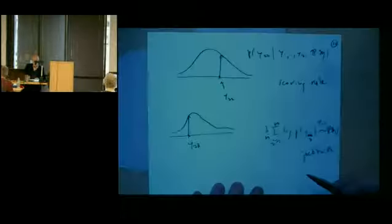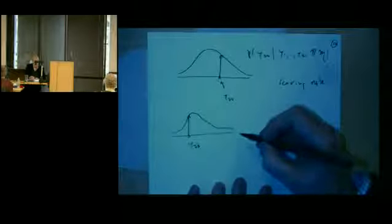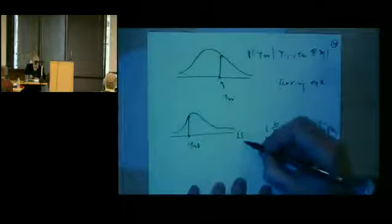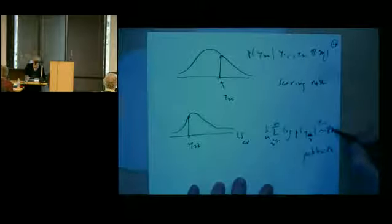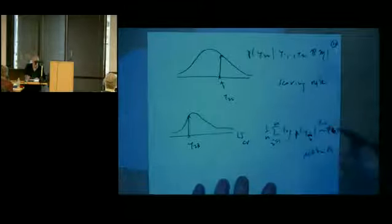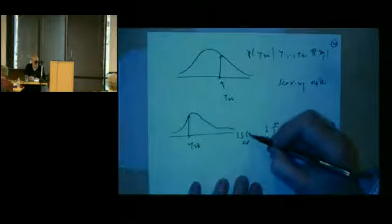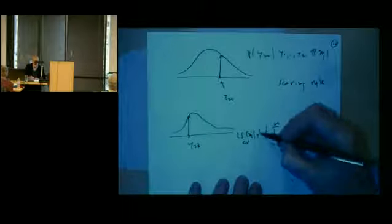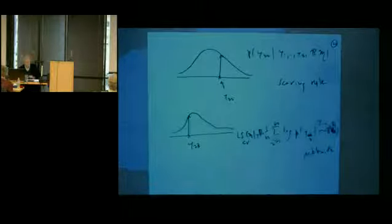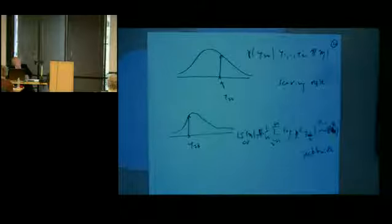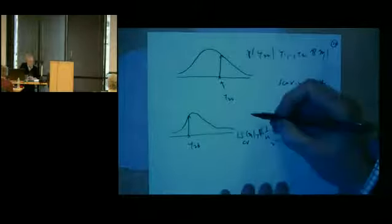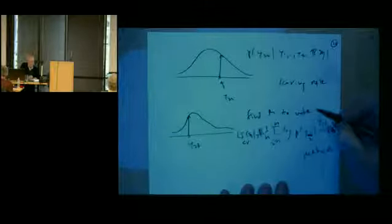This thing here is called the cross-validation log score. It evaluates that particular model or model class given the data vector Y and the background information. This provides what I view as one of the most valuable criteria to use for comparing one model with another. Basically, what we want to do is find model M to make this log score big.